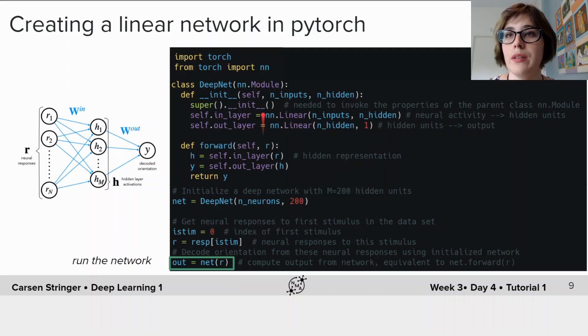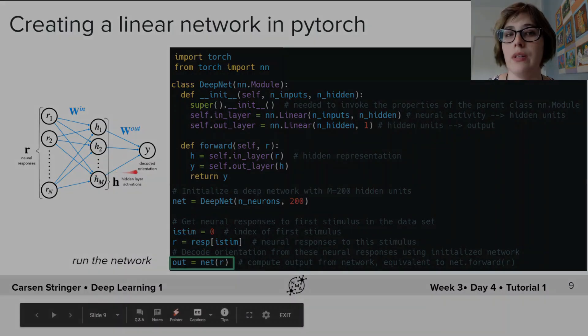So every deep network that you build with PyTorch you need to make sure you have this init method and this forward method and then you can use it in this way in order to run your data through the network.